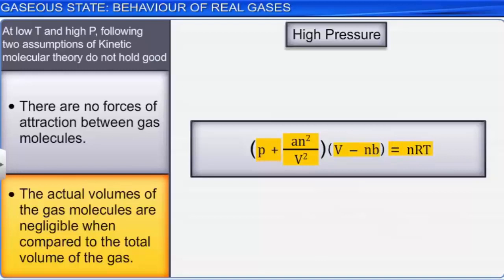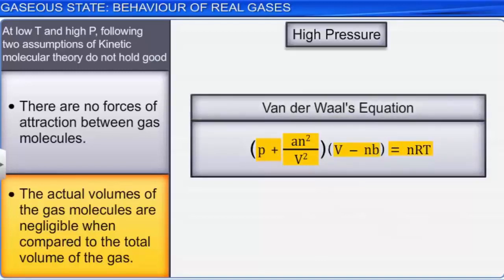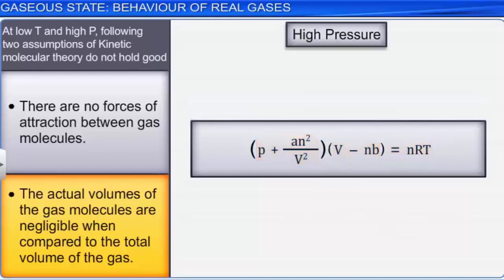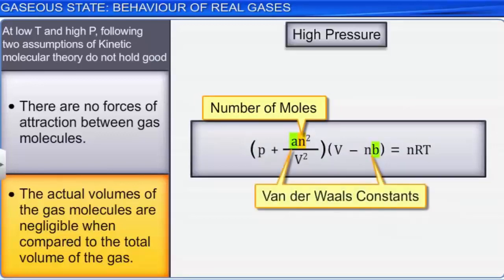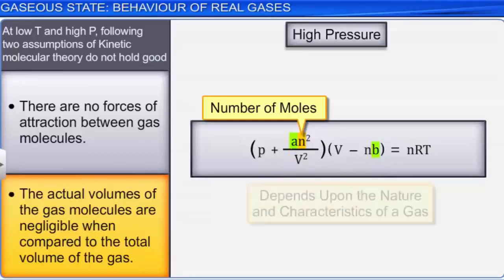Here N indicates the number of moles, and the constants a and b are called van der Waals constants. The values of a and b depend upon the nature and characteristics of a gas. The value of a is independent of temperature and pressure.